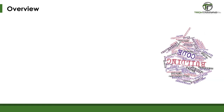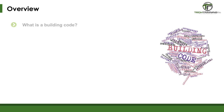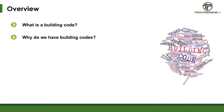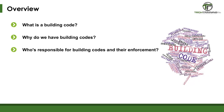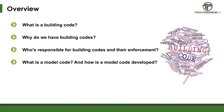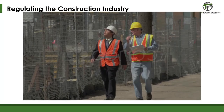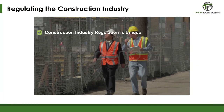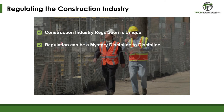Here are some of the questions we hope to answer in this segment: What is a building code? Why do we have building codes? Who is responsible for building codes and their enforcement? What is a model code, and how is a model code developed? Can you get involved in writing the code? The regulation of the construction industry is unique in the United States and even unique compared to other countries. It is important to understand how these codes are created and regulated.